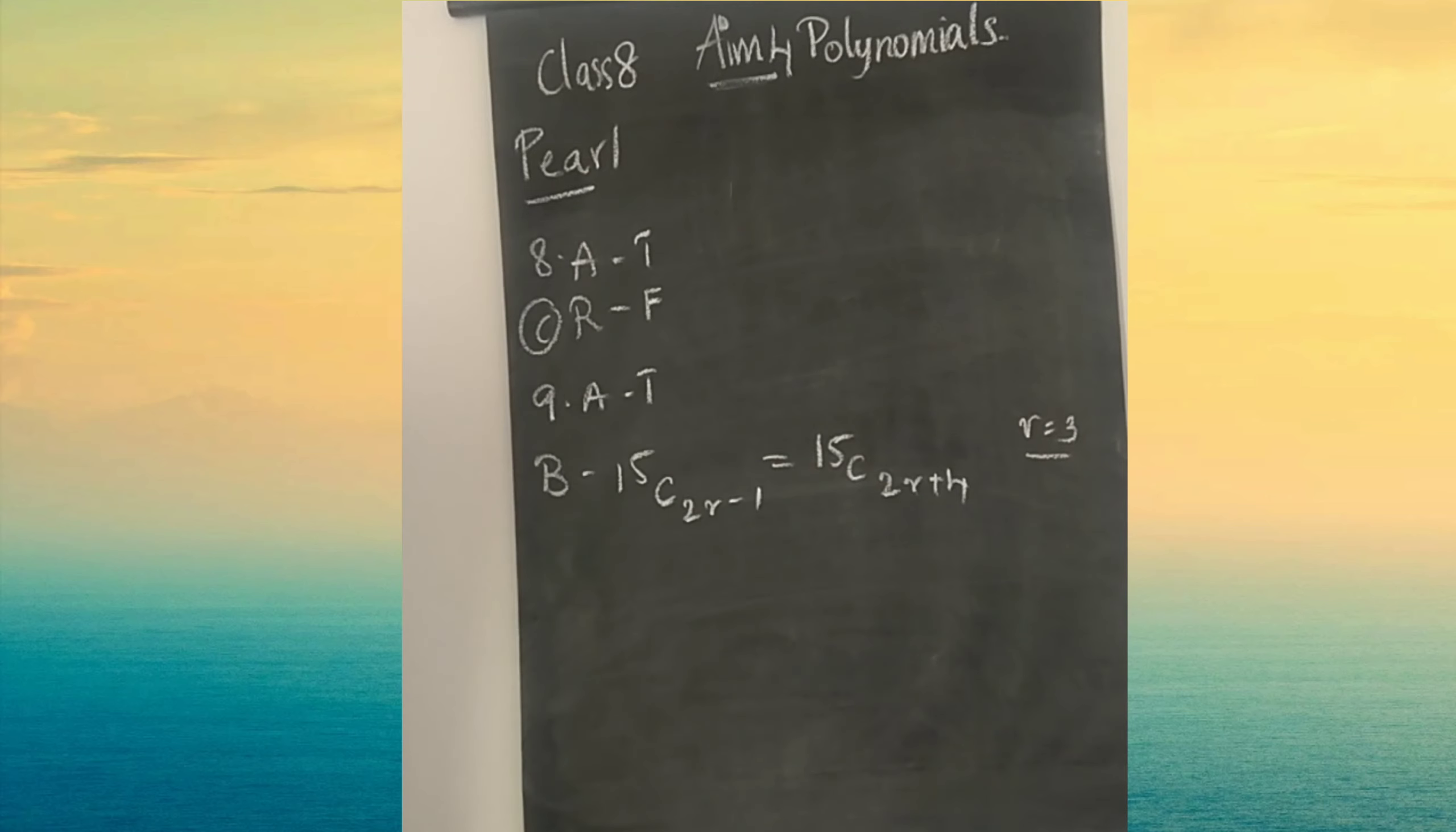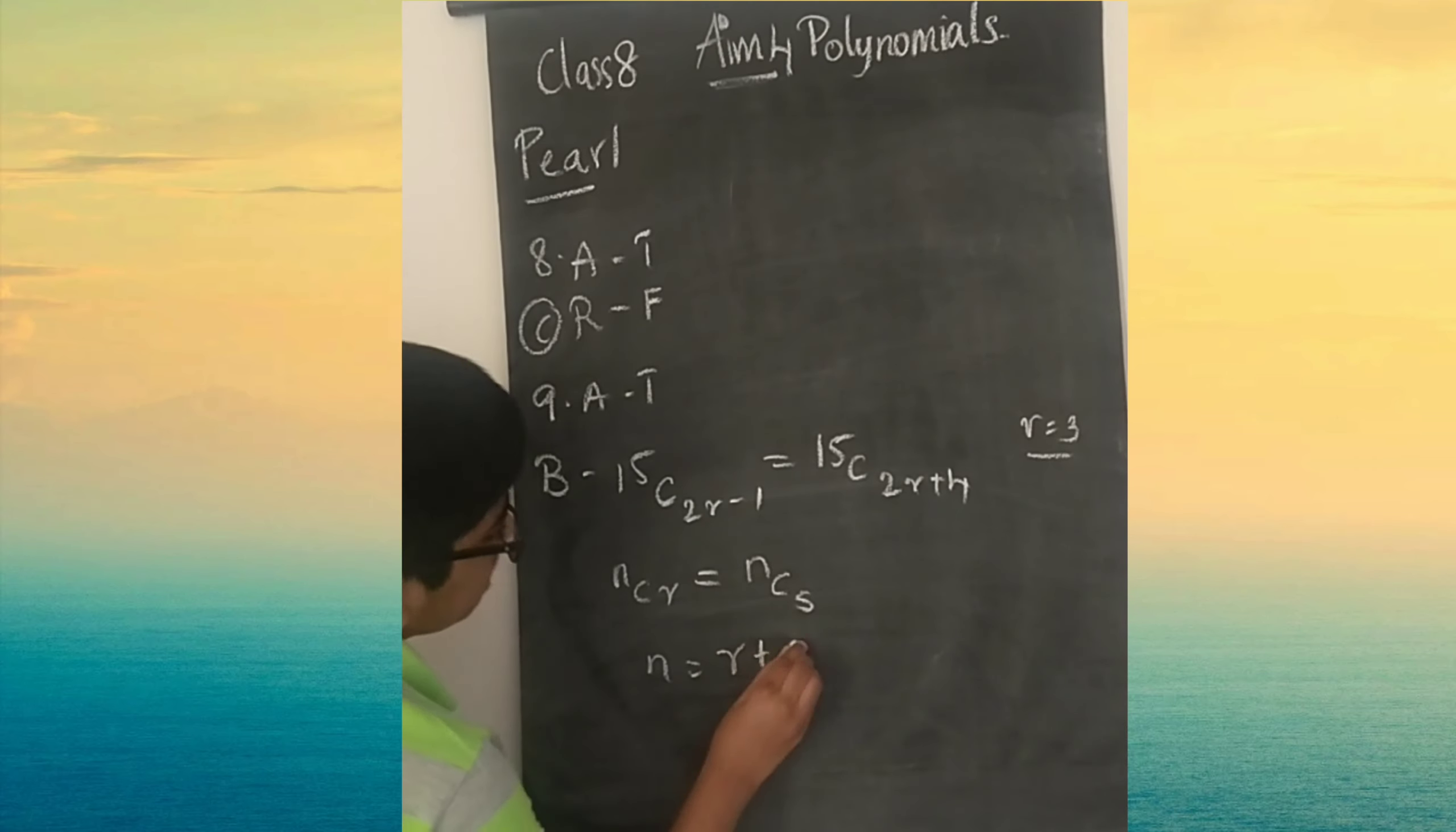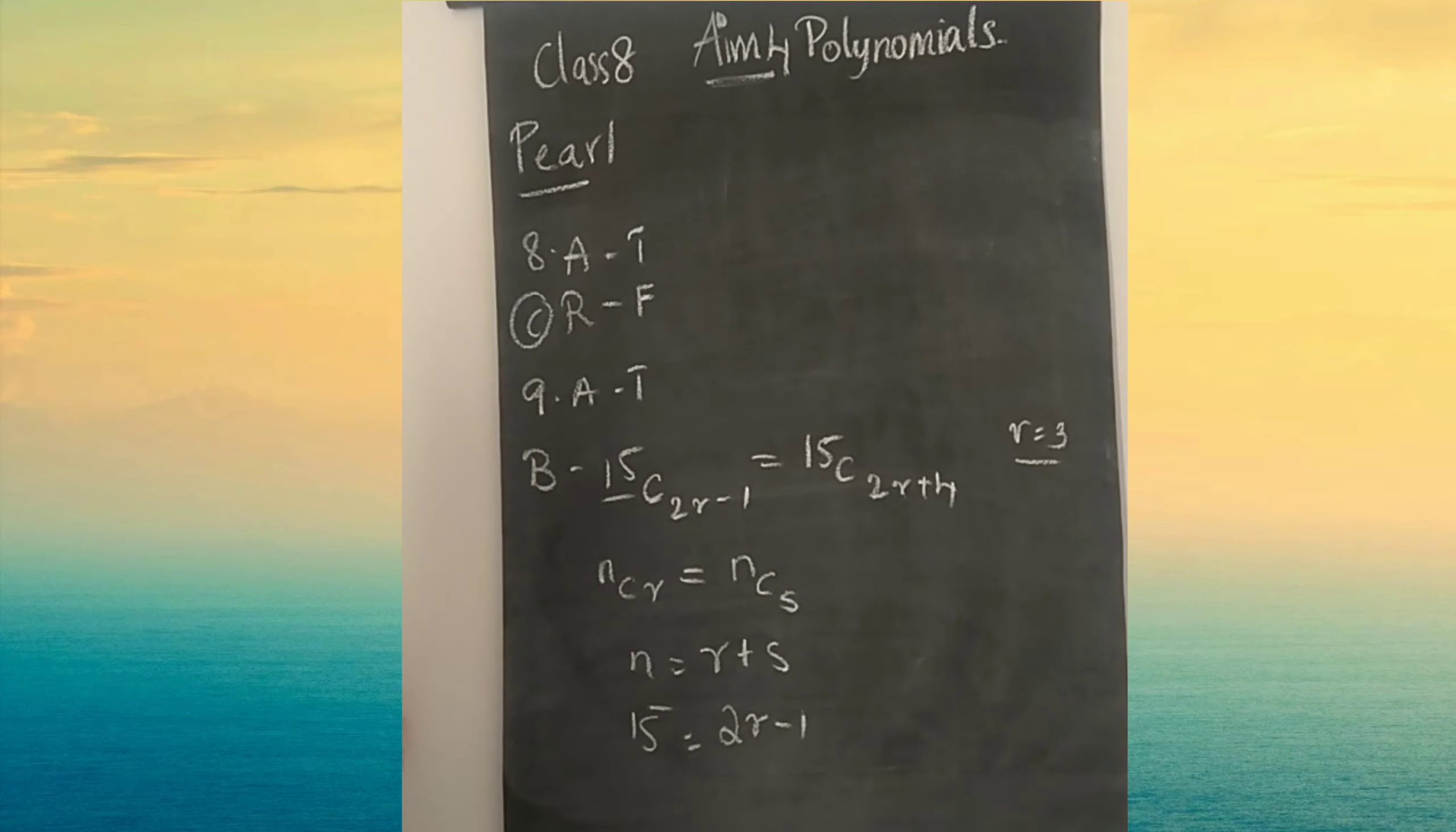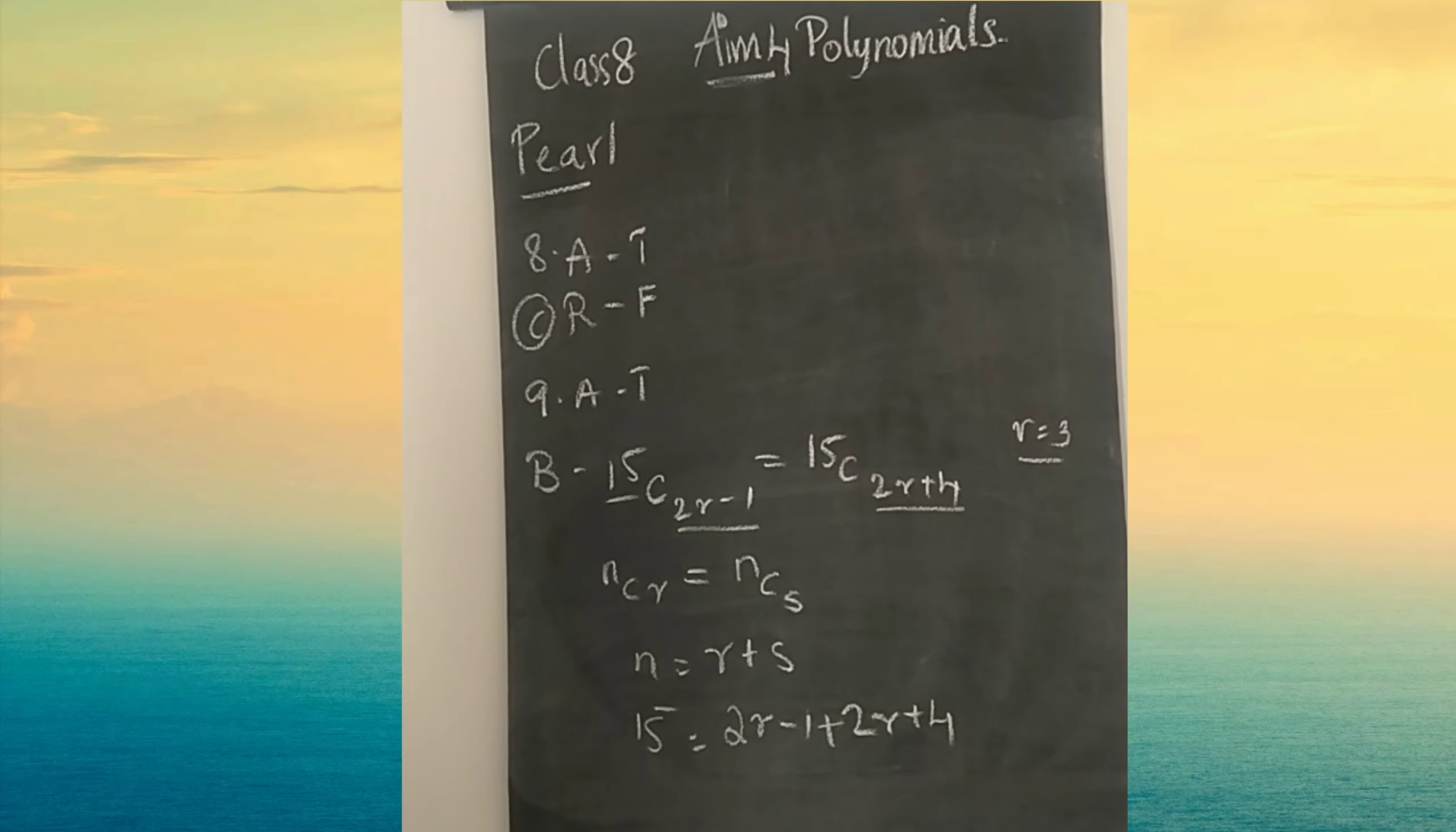15C 2R minus 1 equals 15C 2R plus 4. R value is 3. We have to put 3 in place of R. This is like NCR equals NCS. Then N equals R plus S. 15 equals 2R minus 1 plus 2R plus 4.